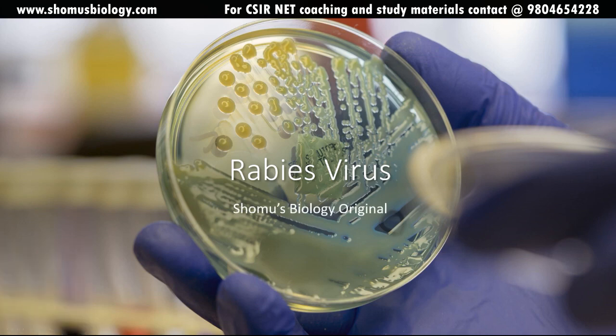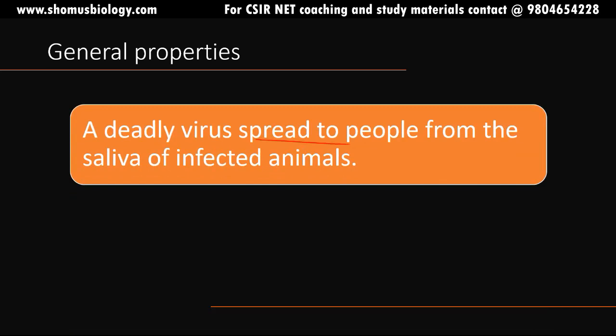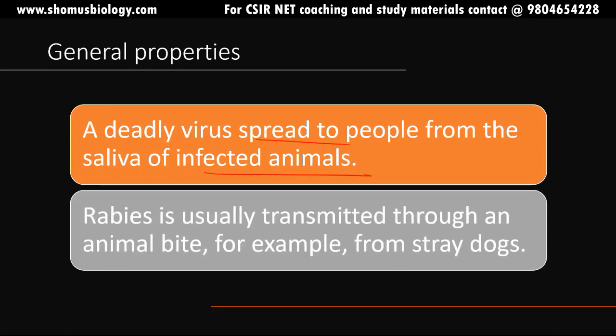Hello friends, welcome back to another video from Shomu's Biology. In this video we're going to talk about rabies virus. Whenever you hear this term, the only thing that should come to mind is dogs — stray dogs. They have this virus in their saliva, and if they bite any individual human, this virus can spread and it can be fatal. Rabies is a deadly virus spread to people from the saliva of infected animals, usually transmitted through an animal bite.